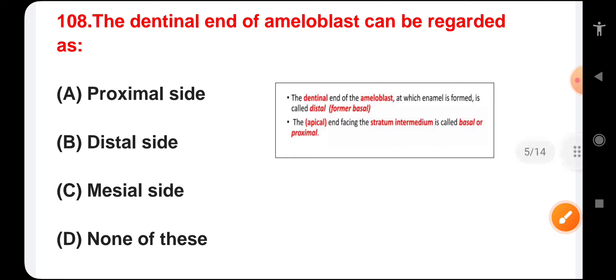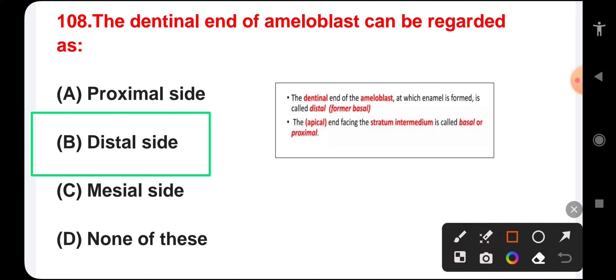The dentinal end of ameloblast can be regarded as proximal site, distal site, mesial site, or none of these. The dentinal end of ameloblast is where enamel is formed. This is called the distal site. The apical end facing the stratum intermedium is called basal or proximal. The correct answer is distal site.